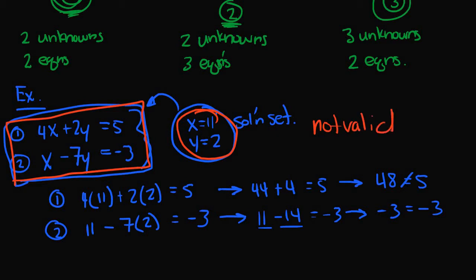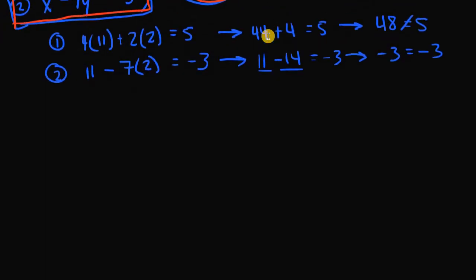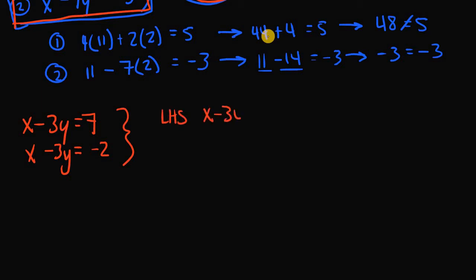There may also be times where a system of linear equations has no solution at all. For example, if we had the equations x minus 3y equals 7 and x minus 3y equals negative 2, this system has no solution. The left-hand side for both equations is exactly the same — x minus 3y — but the right-hand sides differ. So x minus 3y cannot equal both 7 and negative 2 simultaneously.